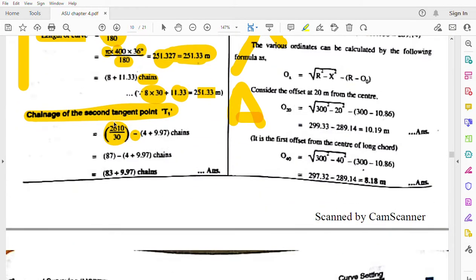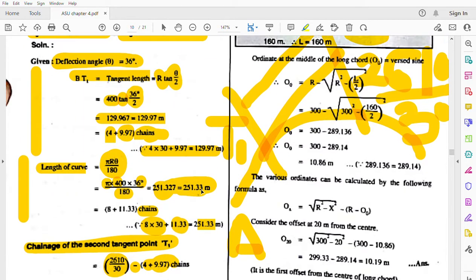So the chainage is 2610 upon 30 minus BT1. Here is the answer: 83 plus 9.97 chains. You can also do this in terms of meters.